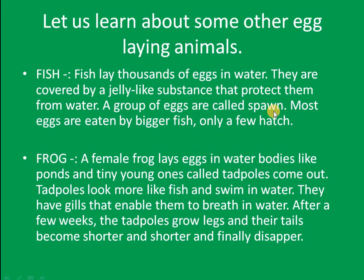A group of eggs is called spawn. The fish lays thousands of eggs in water, covered with a jelly-like substance. Most of these eggs are eaten by bigger fish, and only a few hatch.